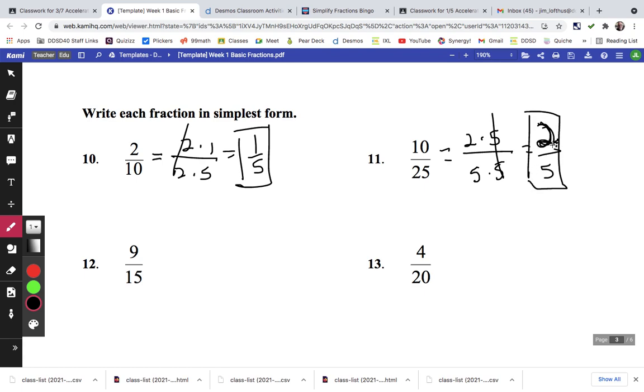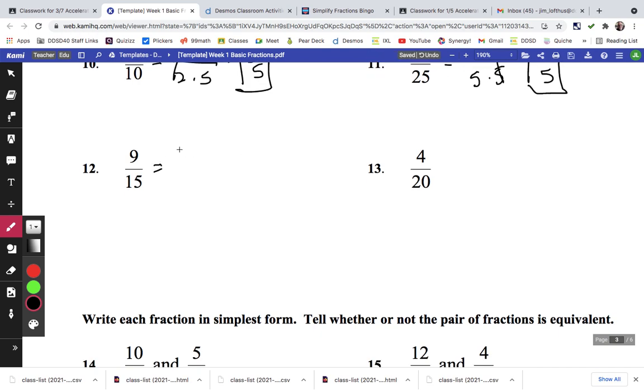This is 3 times 3. This is 3 times 5. They cancel out. So this is 3 fifths. This one is 2 times 2. This 20 is 2 times 2 times 5. Those all cancel. We've got a times 1. So 1 fifth.